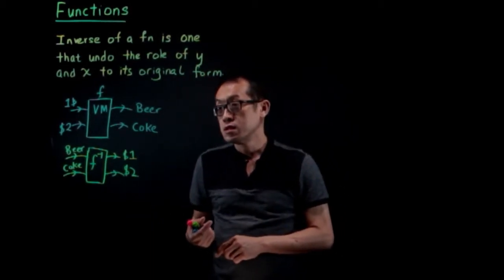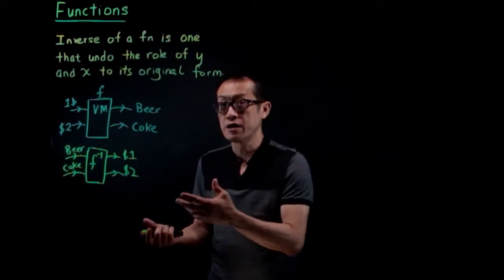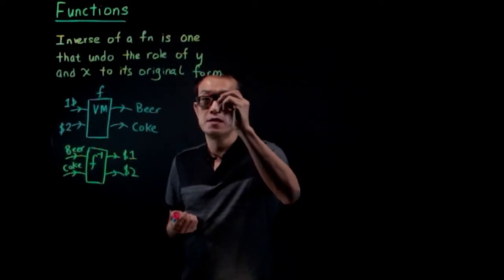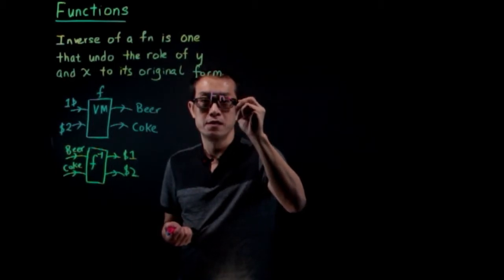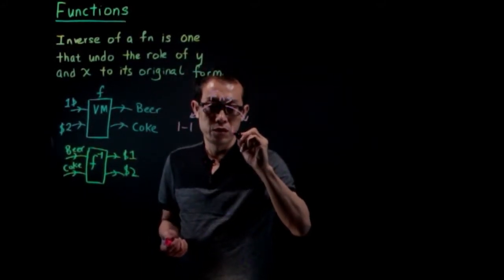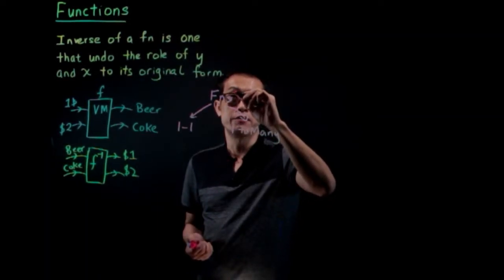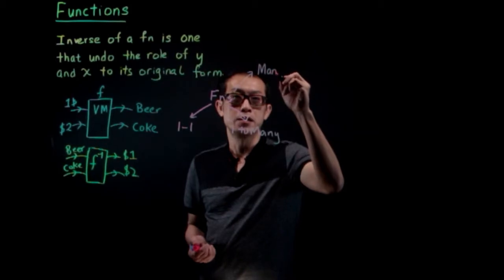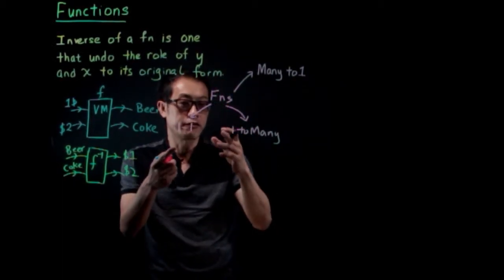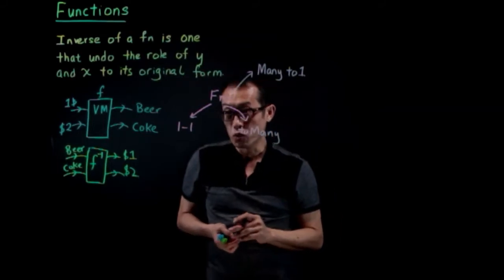Not all functions have an inverse function. To test whether a function has an inverse, let's first look at different types of functions. You have a one-to-one function, a one-to-many function, and a many-to-one function. You can also have a combination, where part of a function is one-to-one and part is many-to-one.